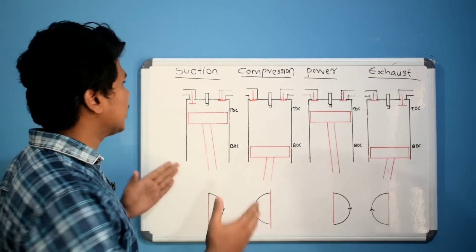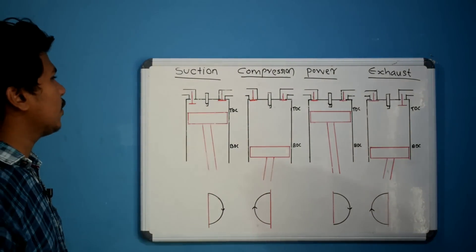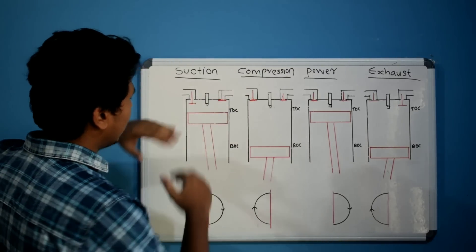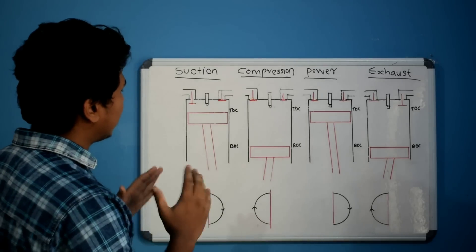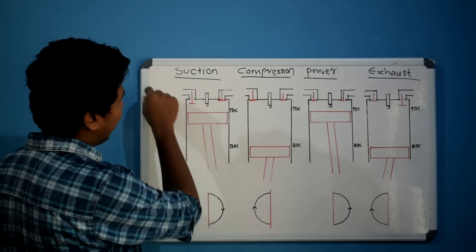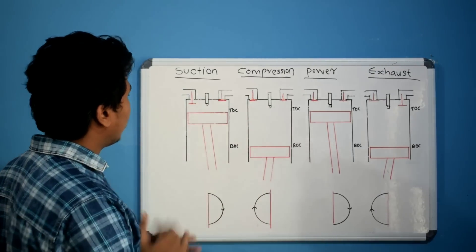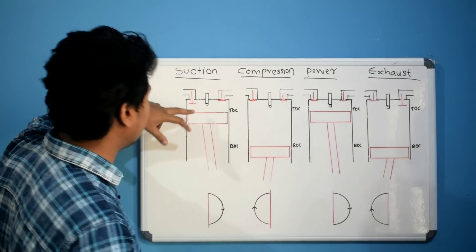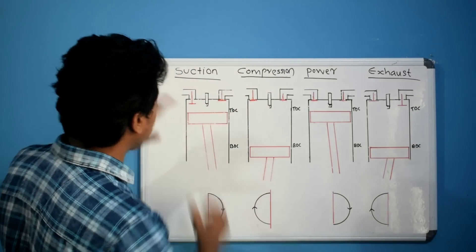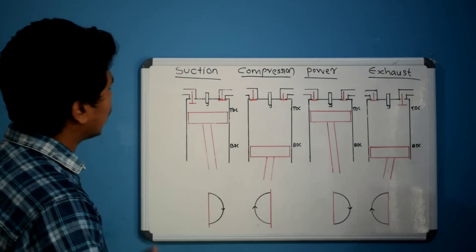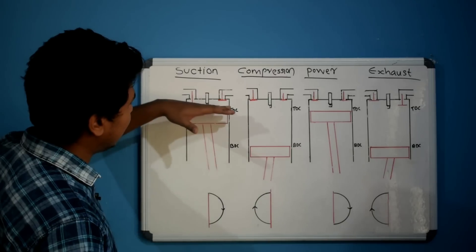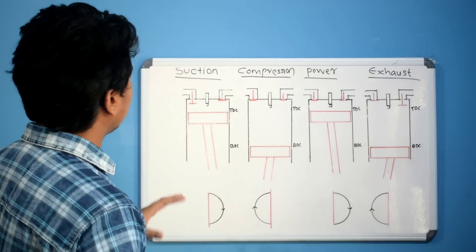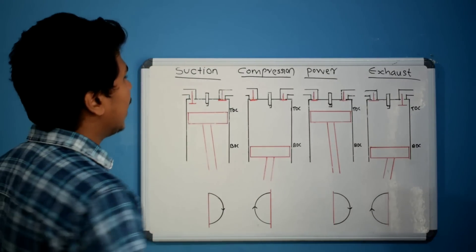The first stroke is called the suction stroke, also called the inlet stroke or intake stroke. In this first stroke, the piston moves from TDC to BDC. This movement creates a vacuum — a negative pressure. The inlet valve opens and the air-fuel mixture enters. In a petrol engine, the air and petrol mix in a carburetor. The fuel fills the cylinder as the piston reaches BDC. Then the inlet valve closes.